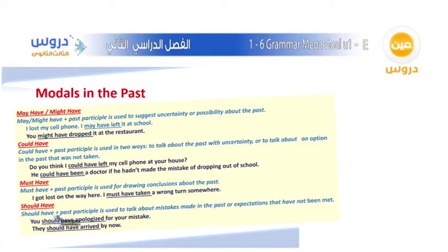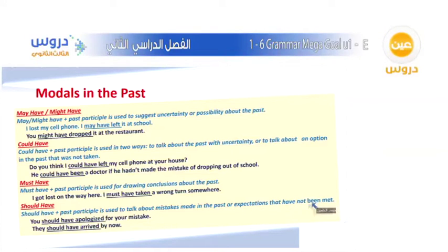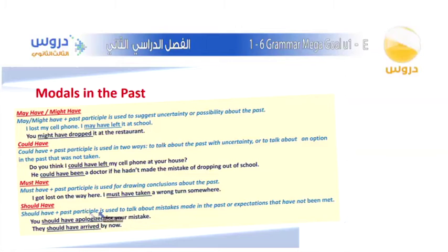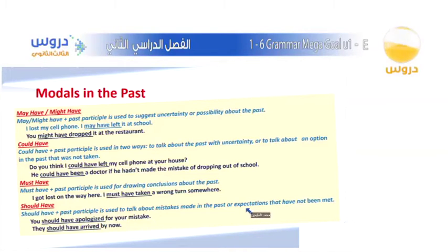Should have plus past participle is used to talk about mistakes made in the past, or expectations that have not been met. Example of a mistake: You should have apologized for your mistake. Example of an unmet expectation: They should have arrived by now — meaning they were expected to arrive but haven't.